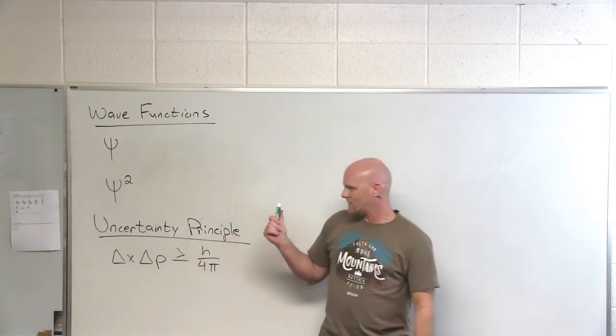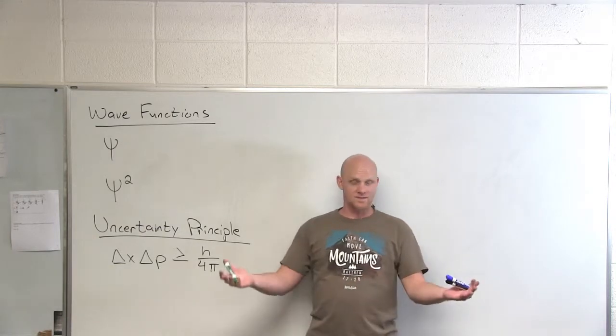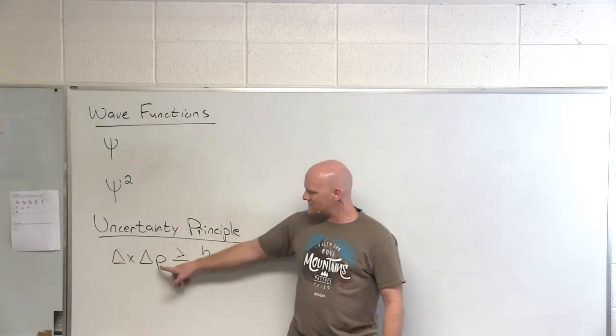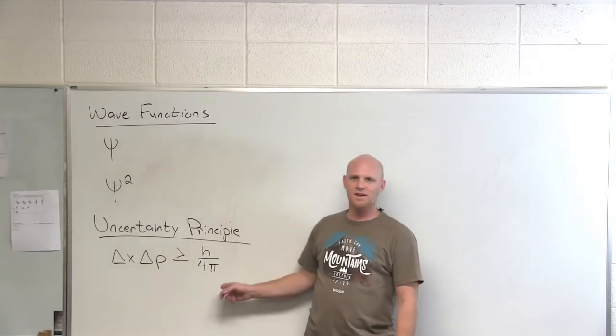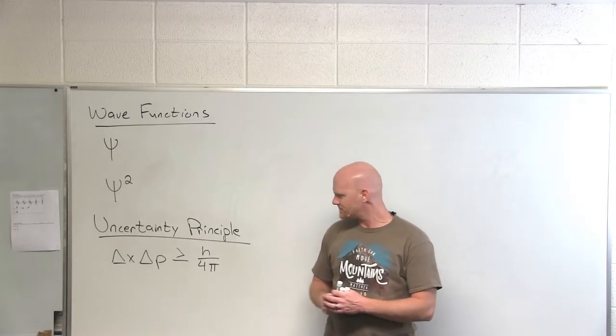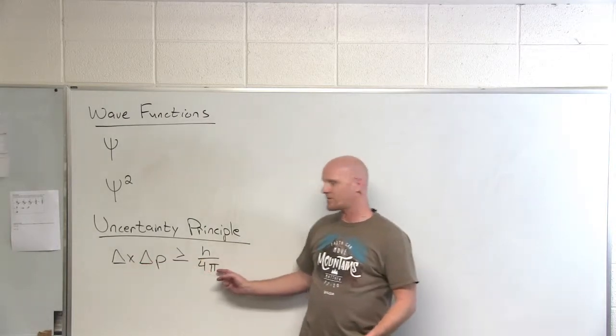So what Heisenberg said is that when you're looking at the atomic level, like for instance an electron, you can't know the uncertainty in its position and the uncertainty in its momentum with infinite precision. So it turns out the minimum if you multiply their uncertainty together, the minimum you're ever gonna have is Planck's constant divided by 4π.